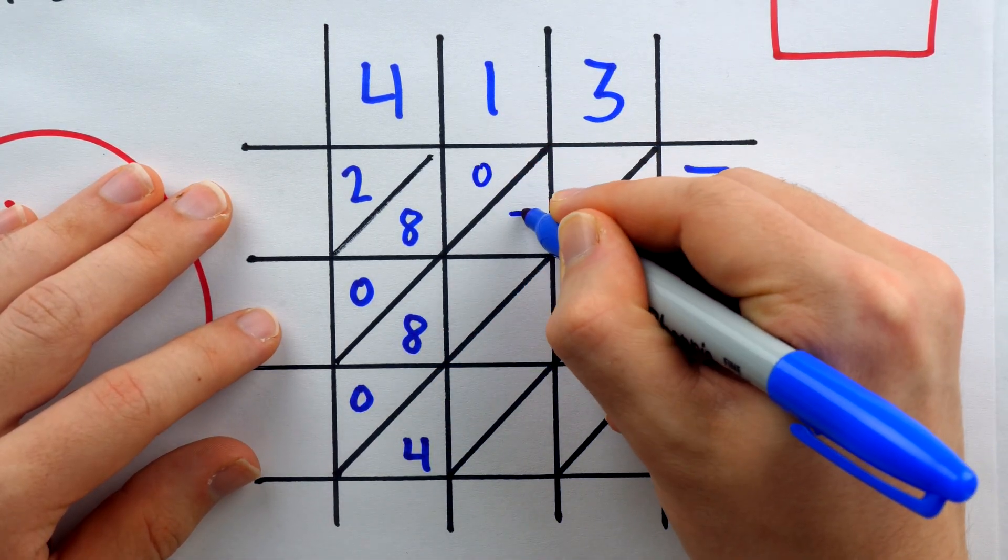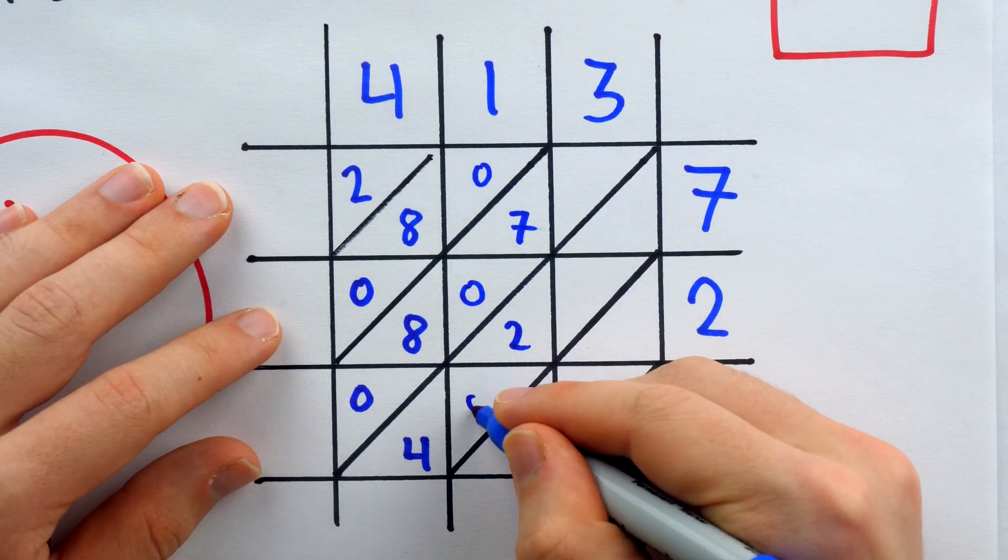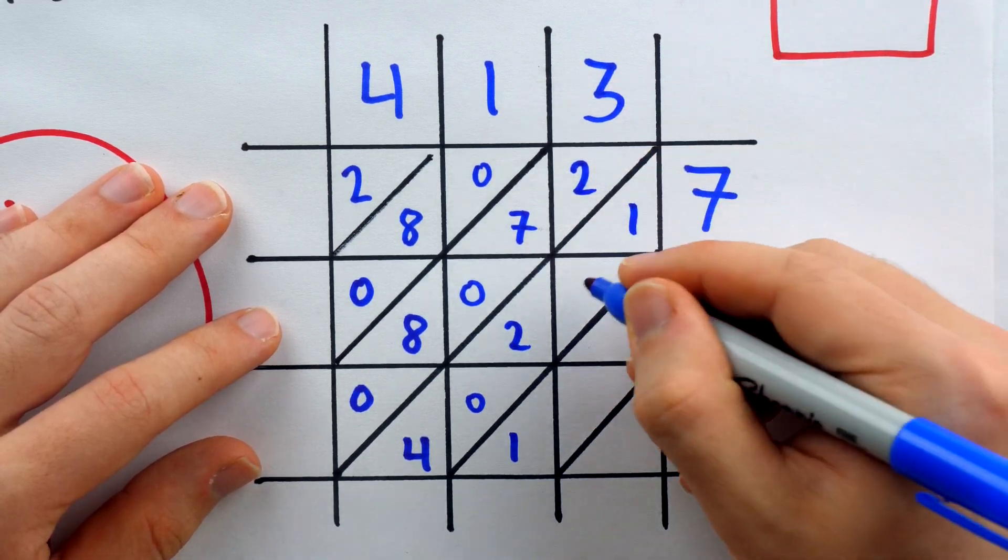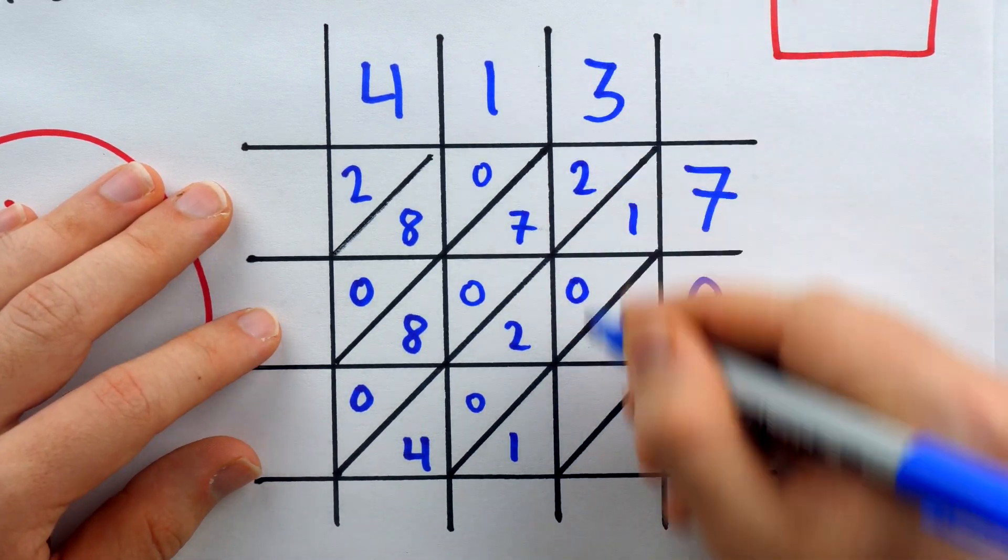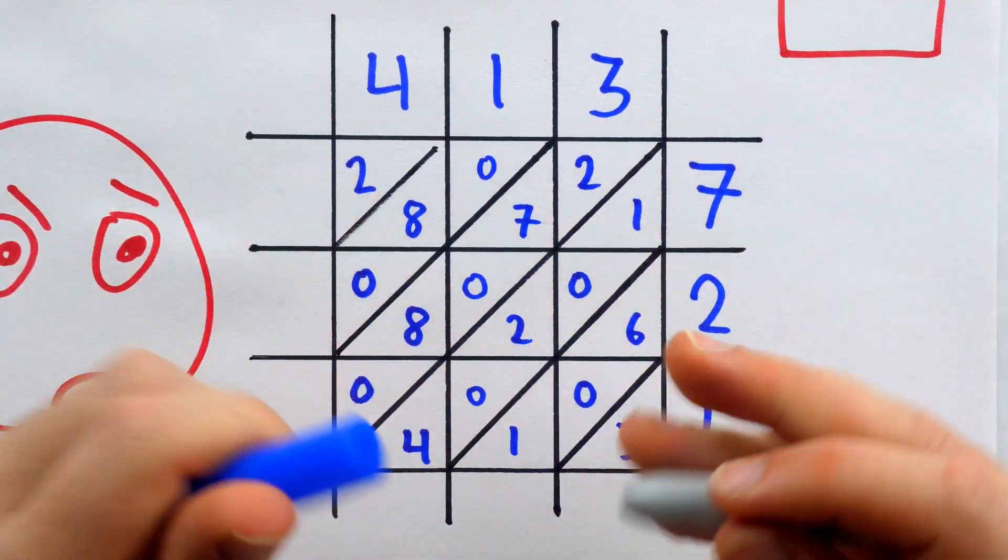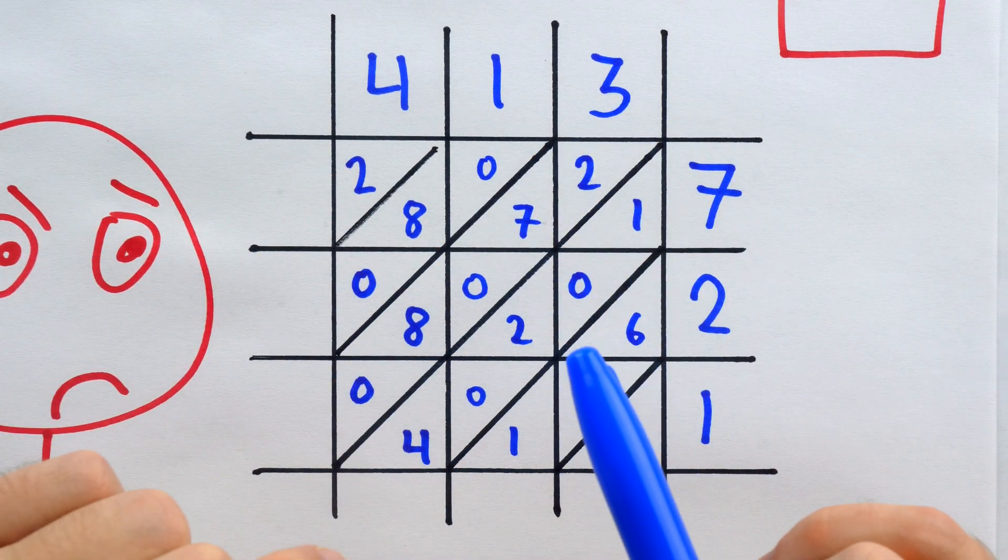1 times 7, that's 7. 1 times 2, that's 2. 1 times 1 is 1. 3 times 7 is 21. 3 times 2 is 6. And 3 times 1 is 3. After a bunch of very easy single digit multiplication, the answer lies here before us.